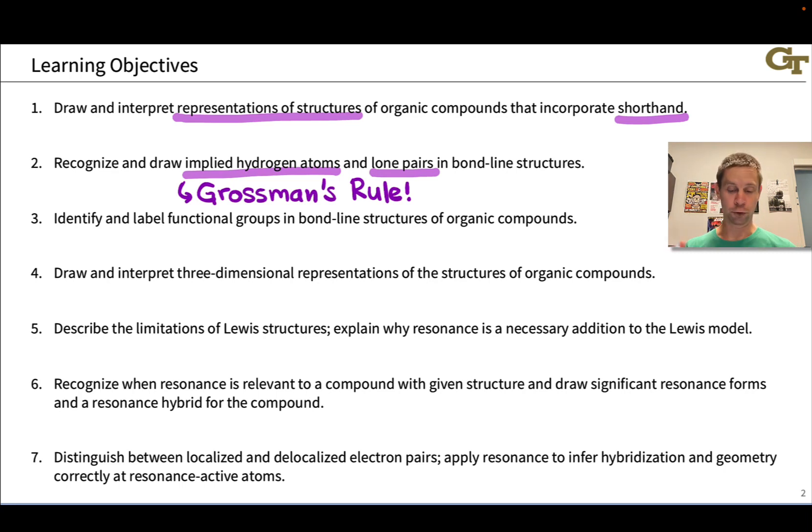We're going to learn about functional groups. We're going to introduce the concept of a functional group and learn how to identify and label them. We'll also interpret three-dimensional representations of organic structures using wedges and dashes for the time being to represent bonds that are pointed out of the screen or out of the page and back into the screen or page.